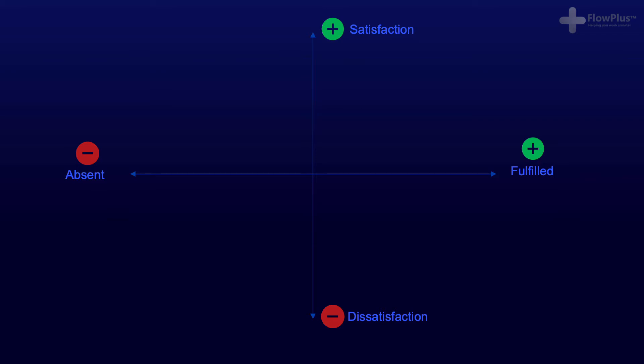Now that we know the axes, we have three individual lines to plot. The first one is called basic needs — these are often known as expected needs. They are things that you, as a customer, expect within your product or service.